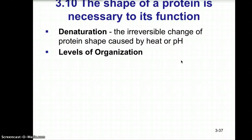The shape of a protein is necessary to its function. Denaturation is the irreversible change of protein shape caused by temperature or pH changes. When we go outside homeostatic conditions, we can unravel or denature a protein. If that protein is an enzymatic protein used to carry out a chemical reaction, you have destroyed that enzyme, and the reaction will most likely not occur.